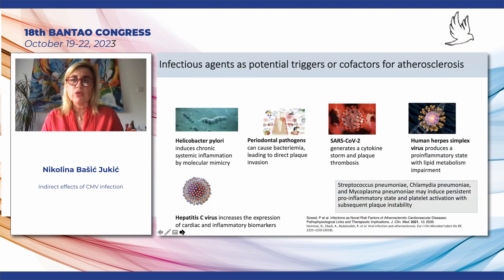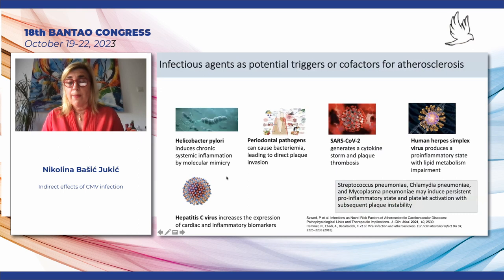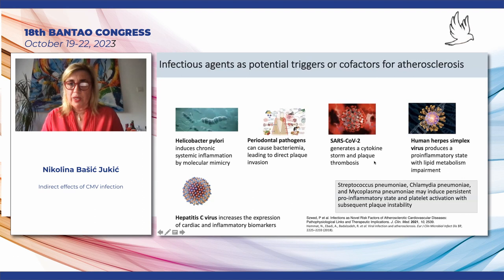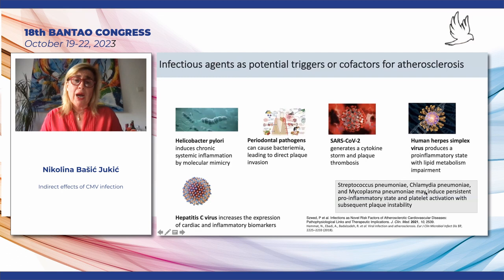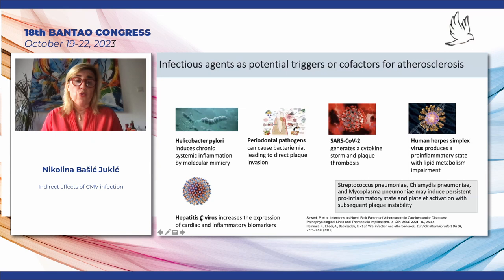What can be implicated in atherosclerosis besides the well-known factors? There are many infectious agents found to be potential triggers or cofactors for atherosclerosis. Helicobacter pylori induces chronic systemic inflammation by molecular mimicry. Periodontal pathogens can cause bacteremia leading to direct plaque invasion. SARS-CoV-2 generates a cytokine storm and plaque thrombosis. Human herpes simplex virus produces a pro-inflammatory state with lipid metabolism impairment. The same is known for Streptococcus pneumoniae, Chlamydia pneumoniae, Mycoplasma pneumoniae, and hepatitis C virus.